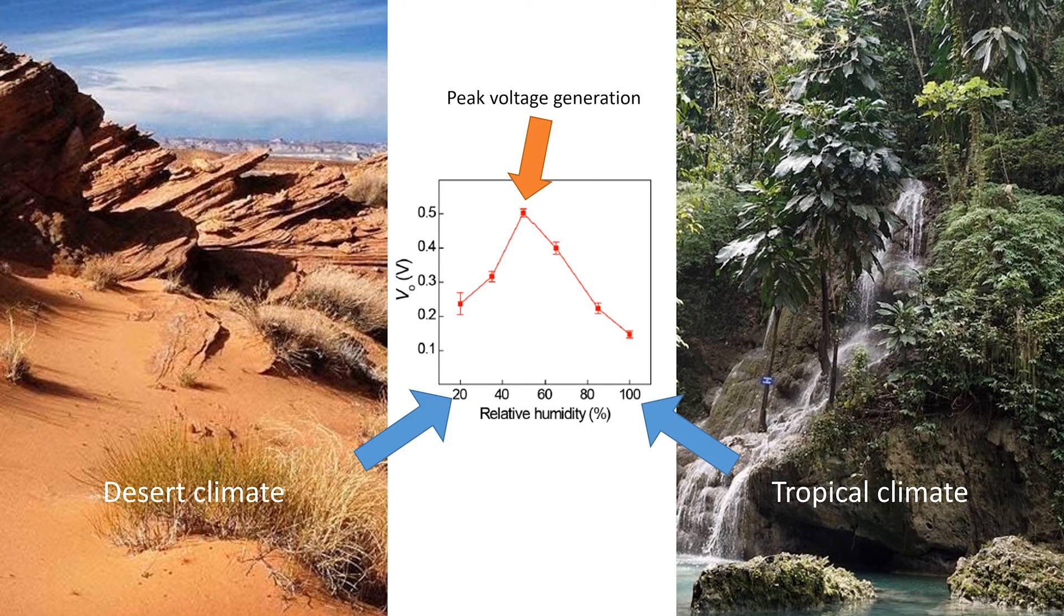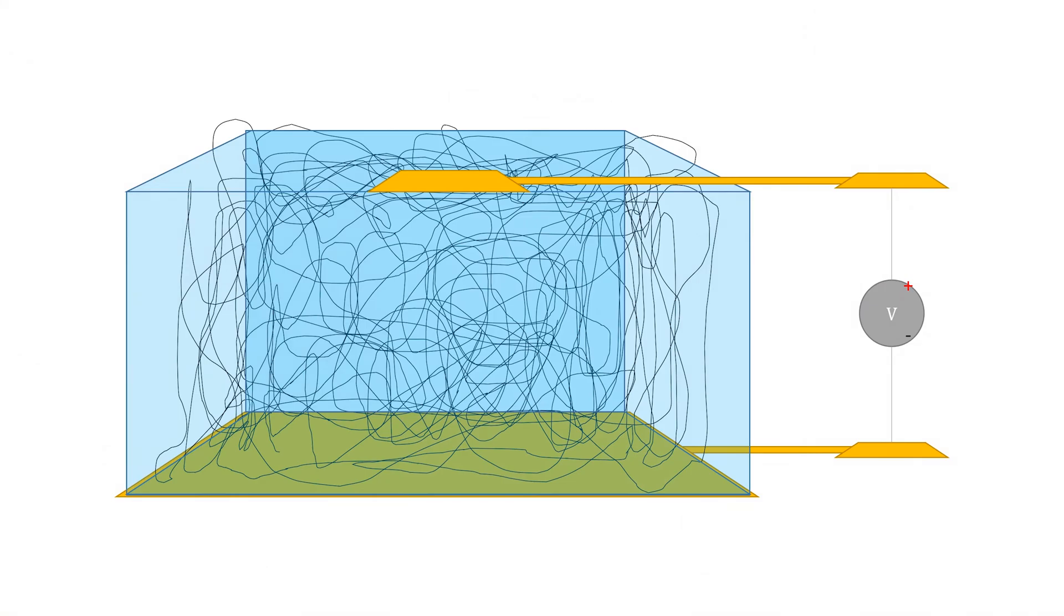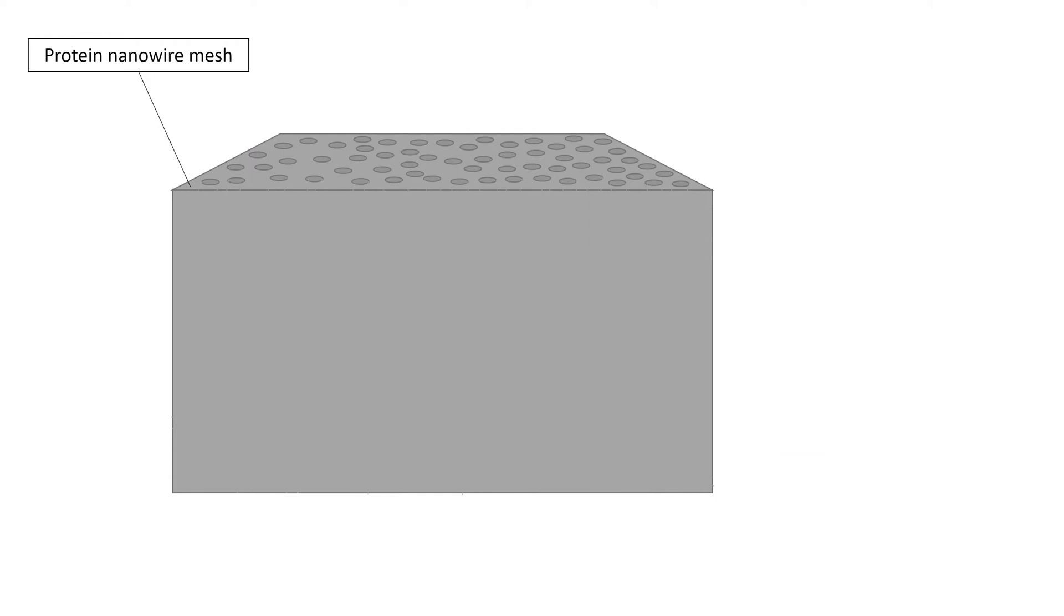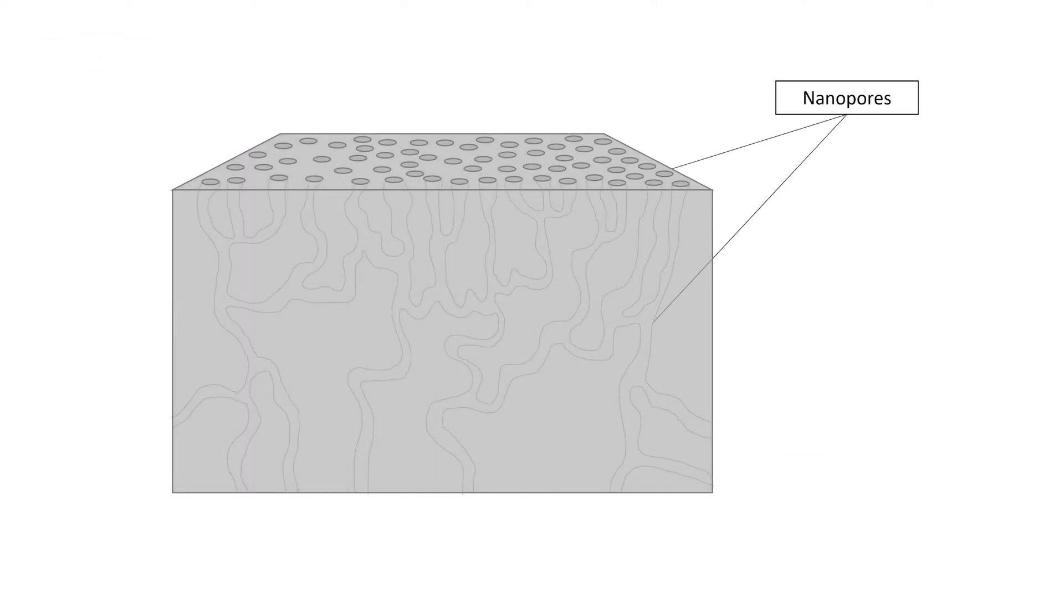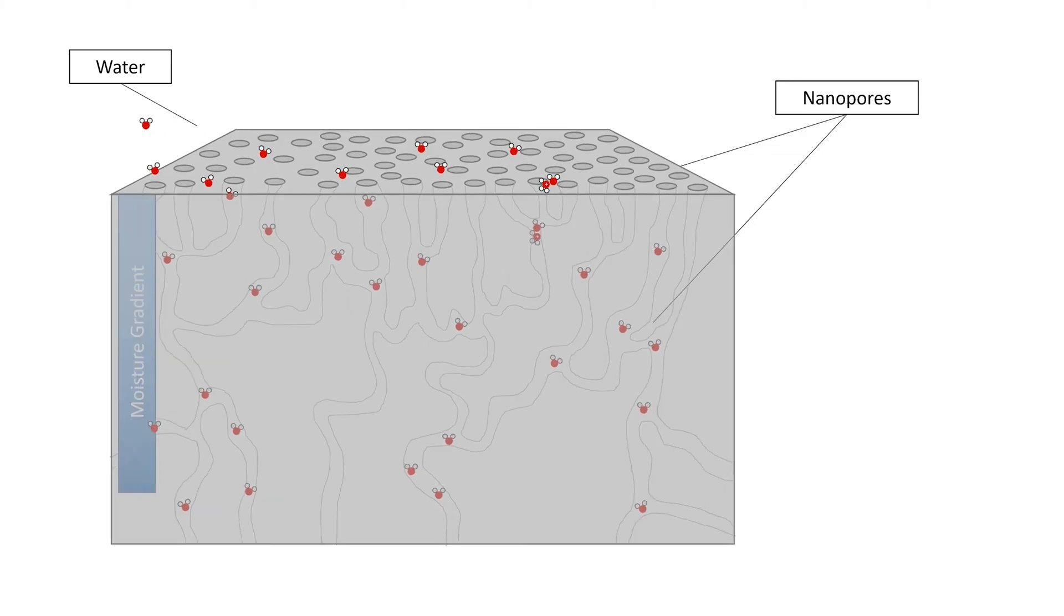All in all, the researchers managed to create a device capable of sustained and continuous energy production from air moisture. The authors hypothesized that using protein nanowires resulted in a mesh filled with nanopores, which in contrast to previous devices leads to a spontaneous formation of a moisture gradient. The formation of this gradient was attributed to the nanopores allowing water to pass through them, it being more difficult to reach the lower levels than the higher levels.